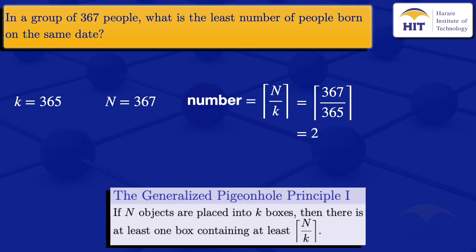So in a group of 367 people, the least number of people born on the same date is 2.